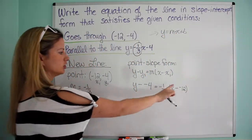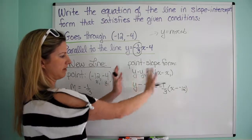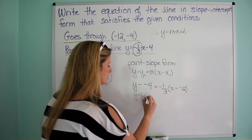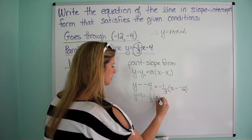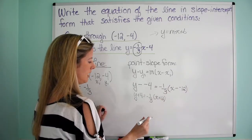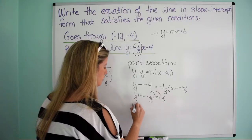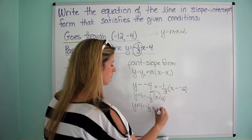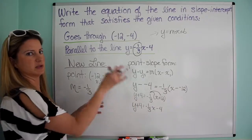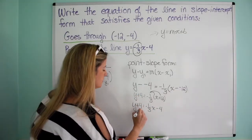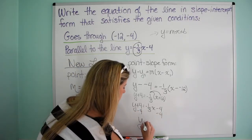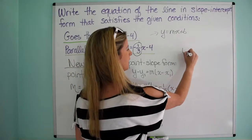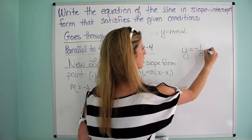That's our goal — slope-intercept form. So if I just solve for y, get everything on the right-hand side and leave y on the left, I'll have it in that form. This becomes y plus 4 equals negative one-third times x plus 12, because minus and negative is adding. Distributing: y plus 4 equals negative one-third x, and negative one-third times 12 is negative 4. Subtract 4 from both sides: y equals negative one-third x minus 8.